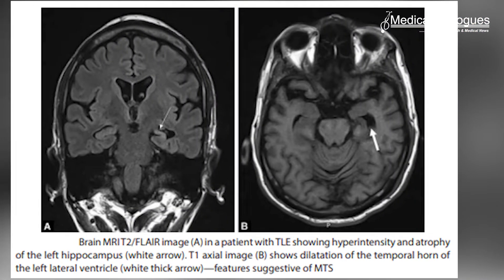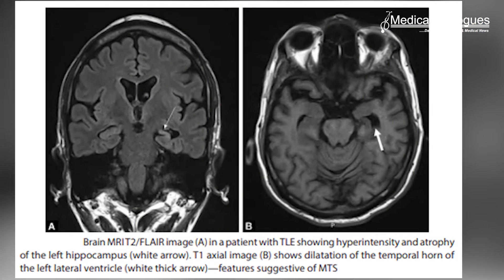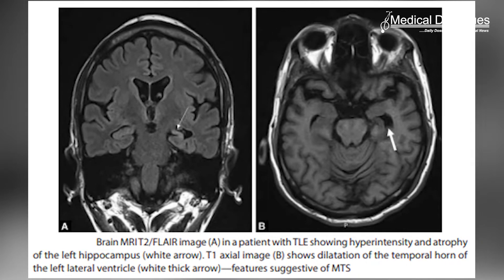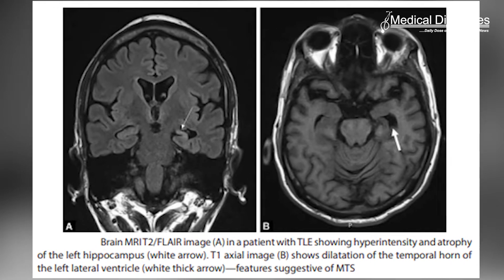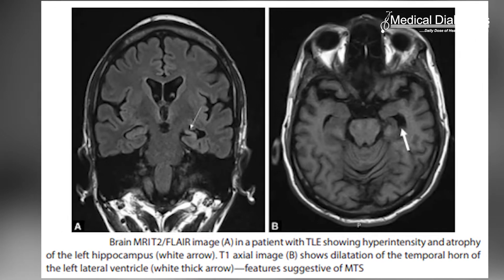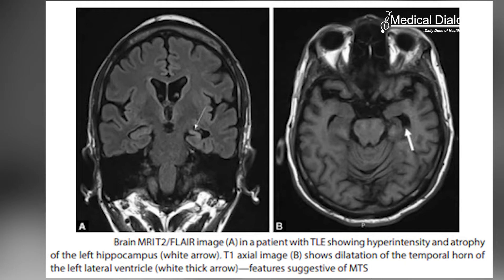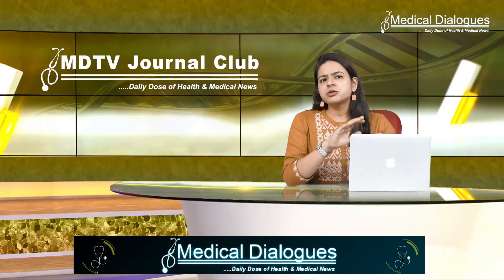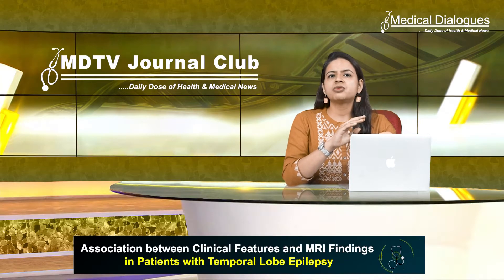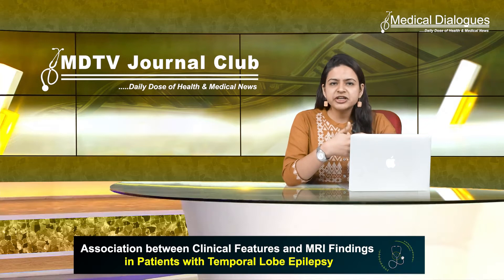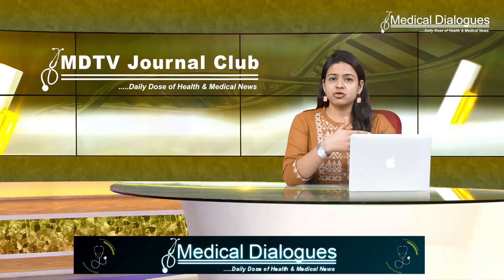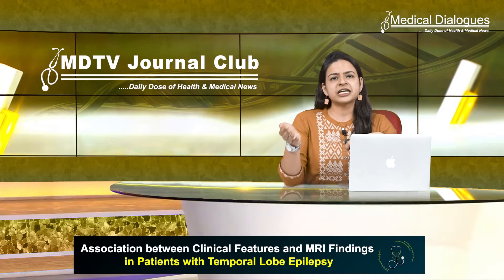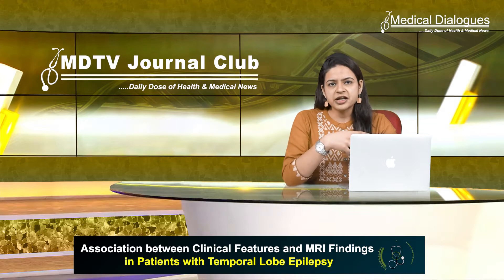Temporal lobe seizures are commonly called focal seizures with impaired awareness. Temporal lobe epilepsy is known to be the most common cause of partial seizures. However, there is not much known about the correlation of the clinical features of temporal lobe epilepsy with specific imaging findings that can be seen on an MRI.